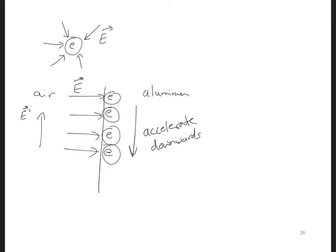And as the electrons accelerate downwards, their electric fields are going to bend downwards, which creates an electric field in the opposite direction as the incident electric field. So here, as the electrons move down, here is our incident E field.